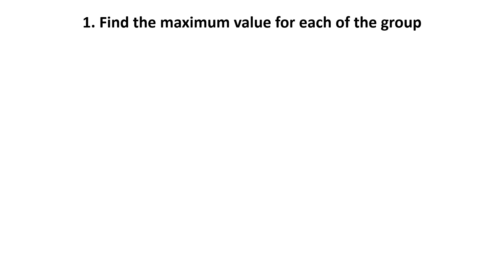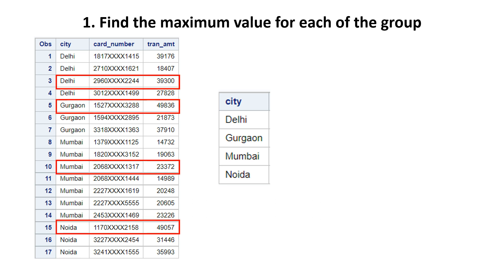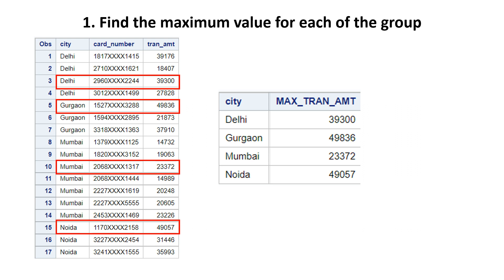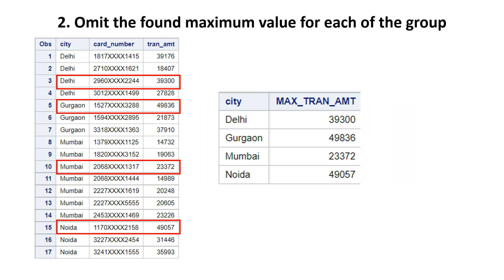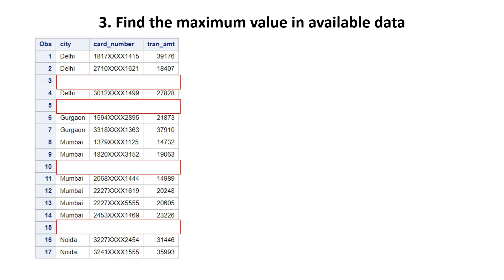There are three simple steps. First, find the maximum value for each group. Looking at the data, these are the maximum amounts per city. The second step is simply omit that found maximum amount. Once you remove the maximum amount, what is left will be the second maximum amount — as simple as that. The most maximum amount is removed, so whatever maximum remains is your second maximum.